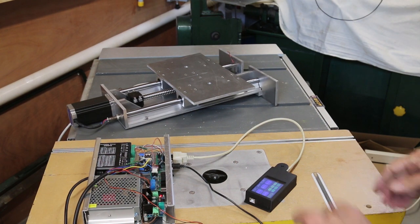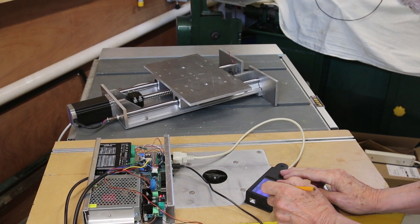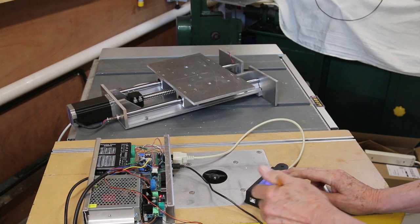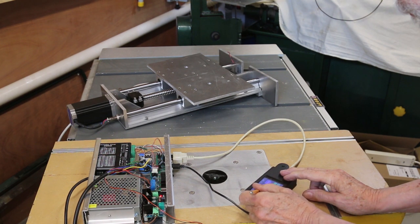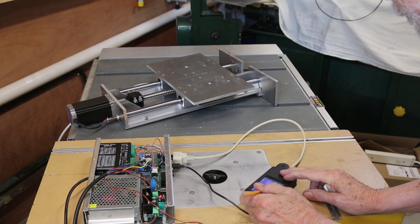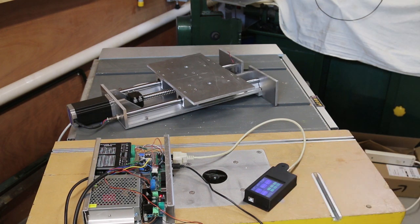Here's the fence moving in jog mode and the router table. It's all working, and it does with the router motor on too, bit too noisy to film that.